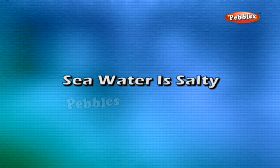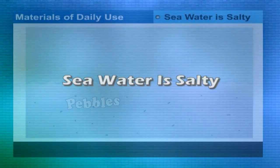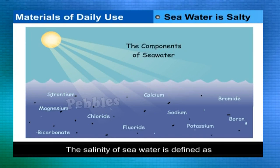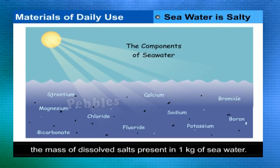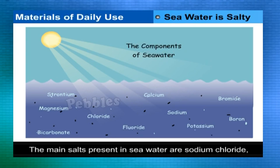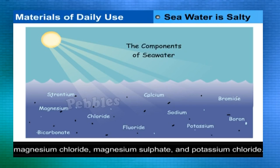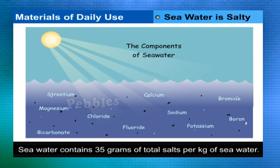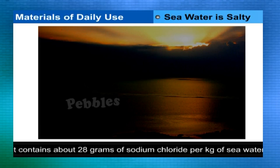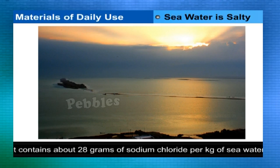Sea water is salty. Salinity is defined as the mass of dissolved salts in one kg of sea water. The main salts present are sodium chloride, magnesium chloride, magnesium sulfate, magnesium bromide, and potassium chloride. Sea water contains 35 grams of total salts per kg, of which about 28 grams is sodium chloride.